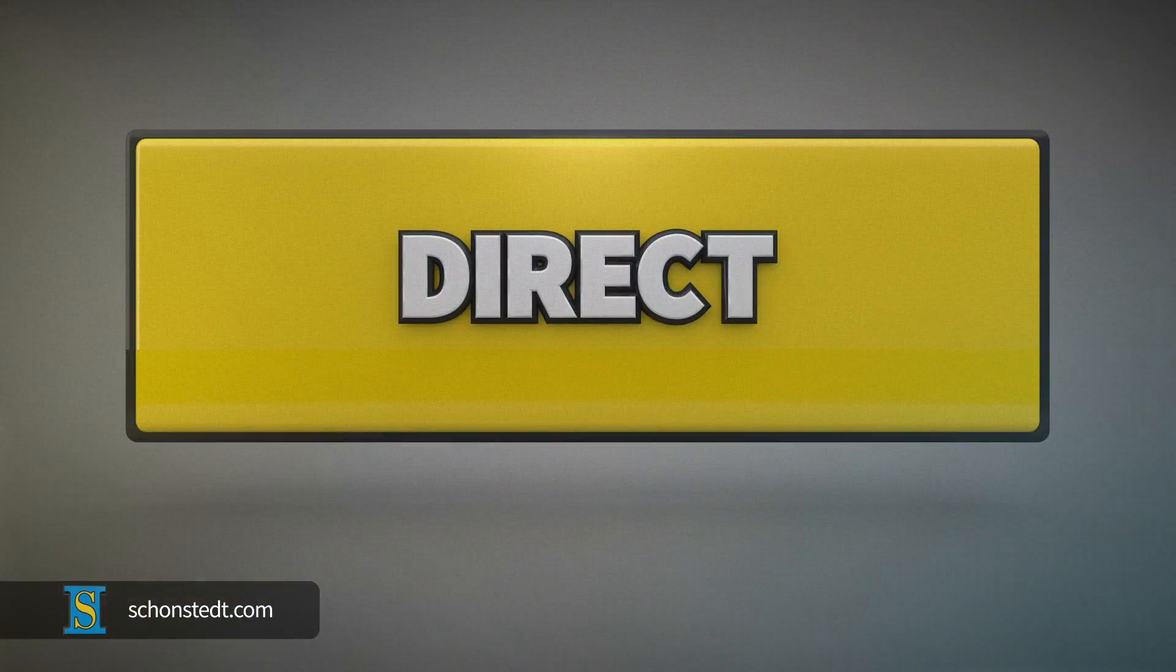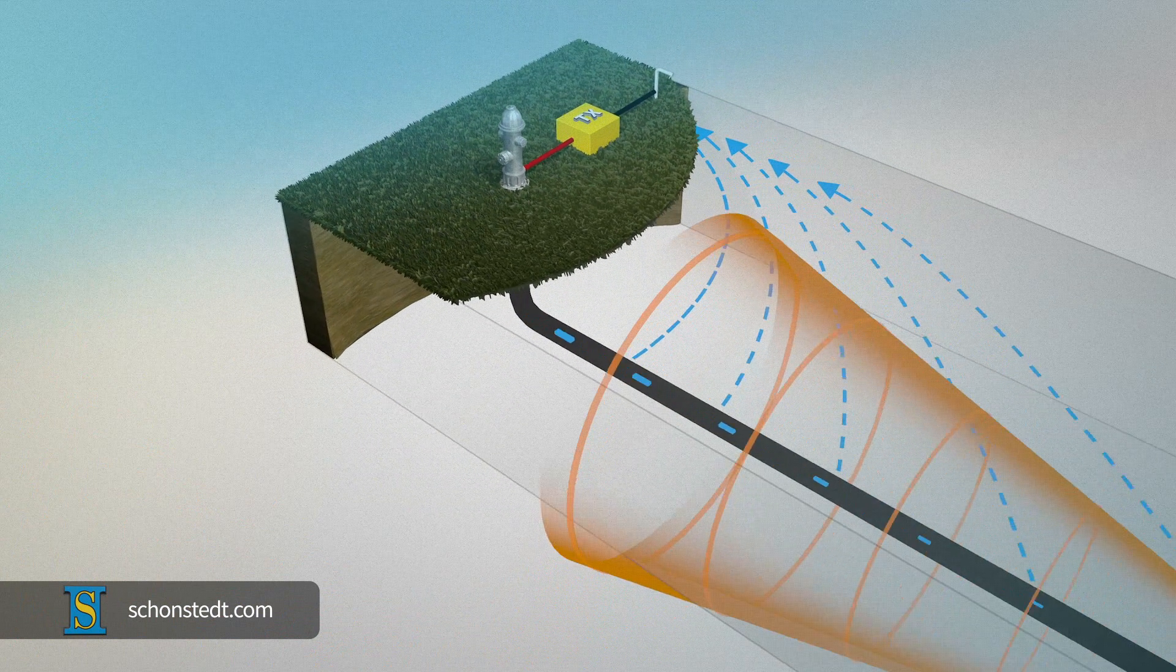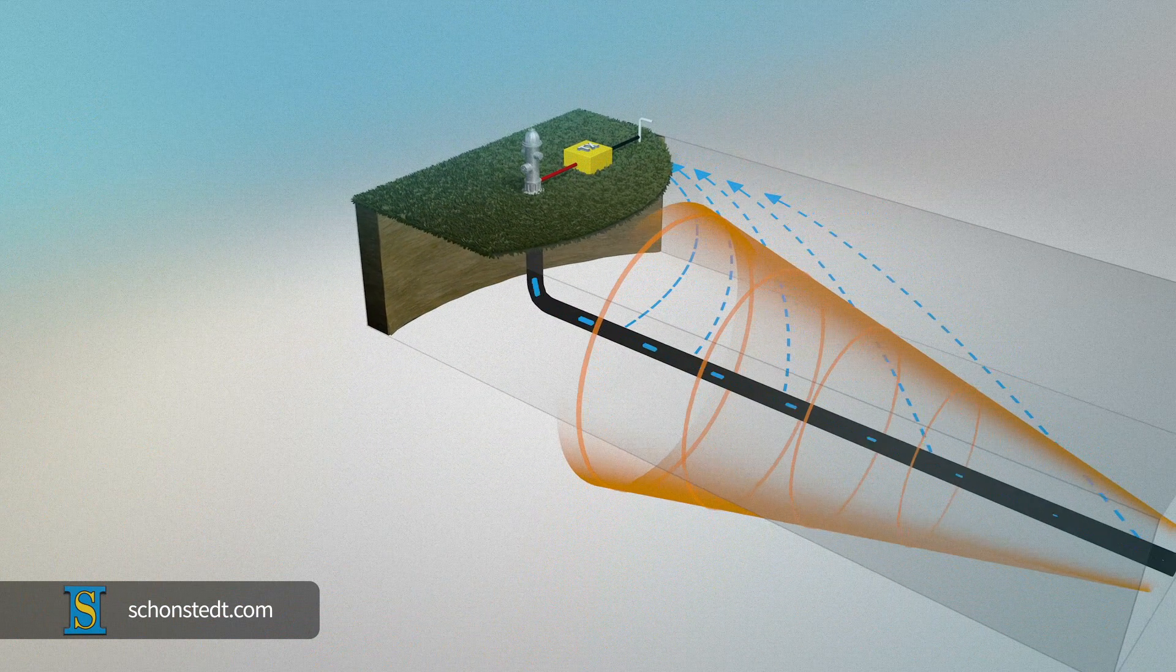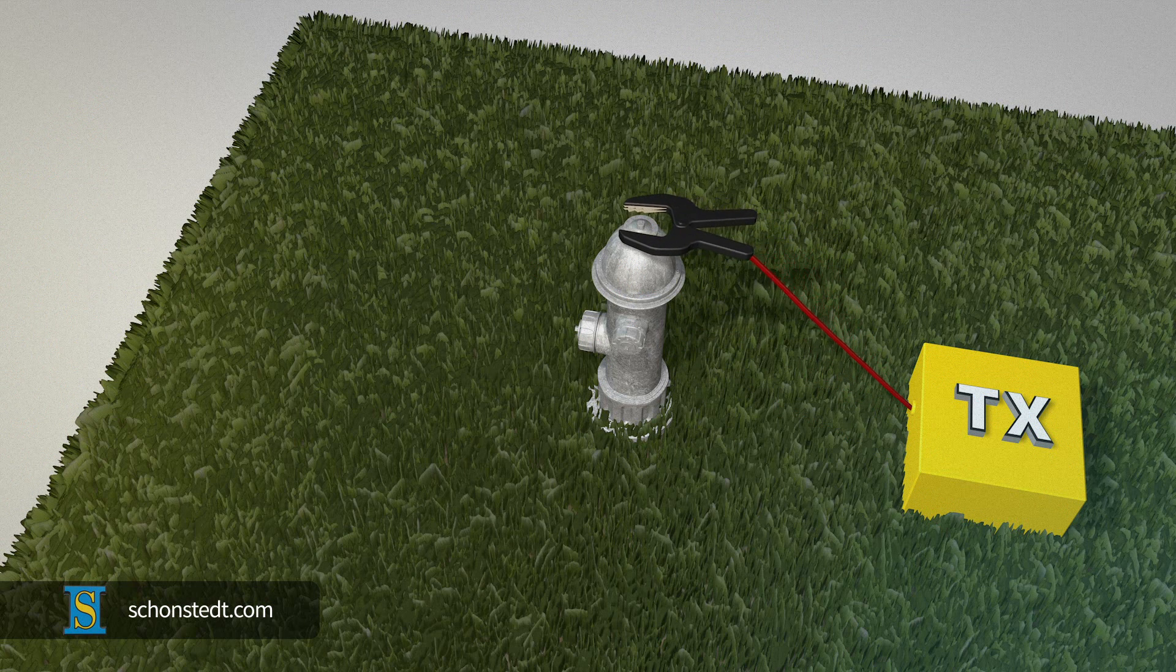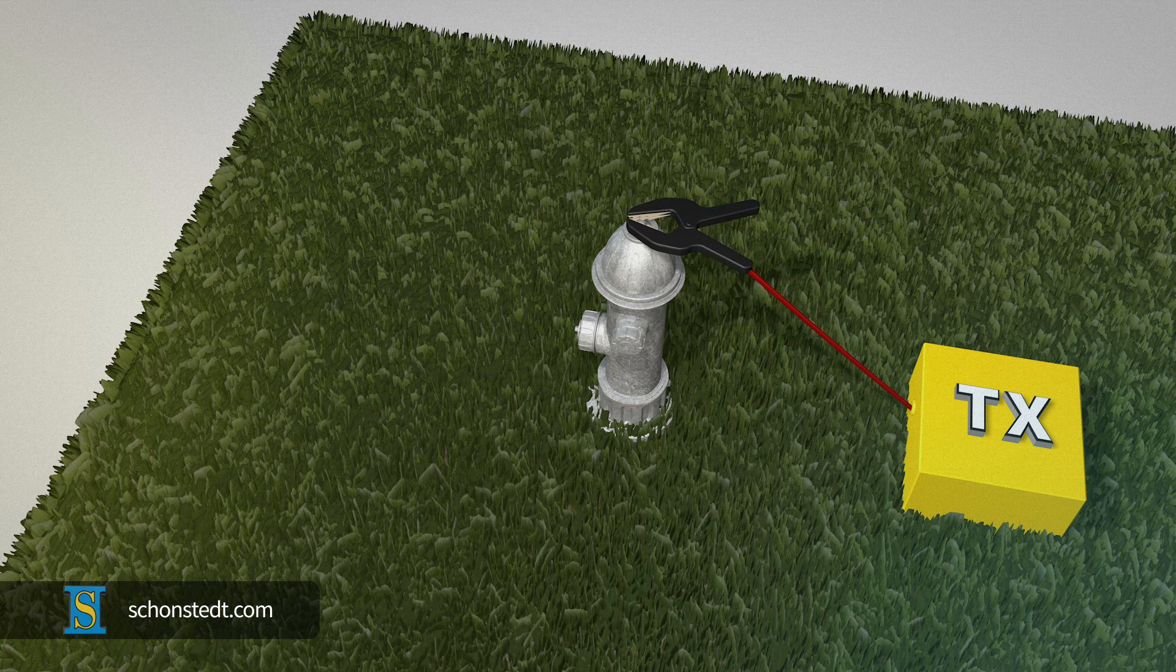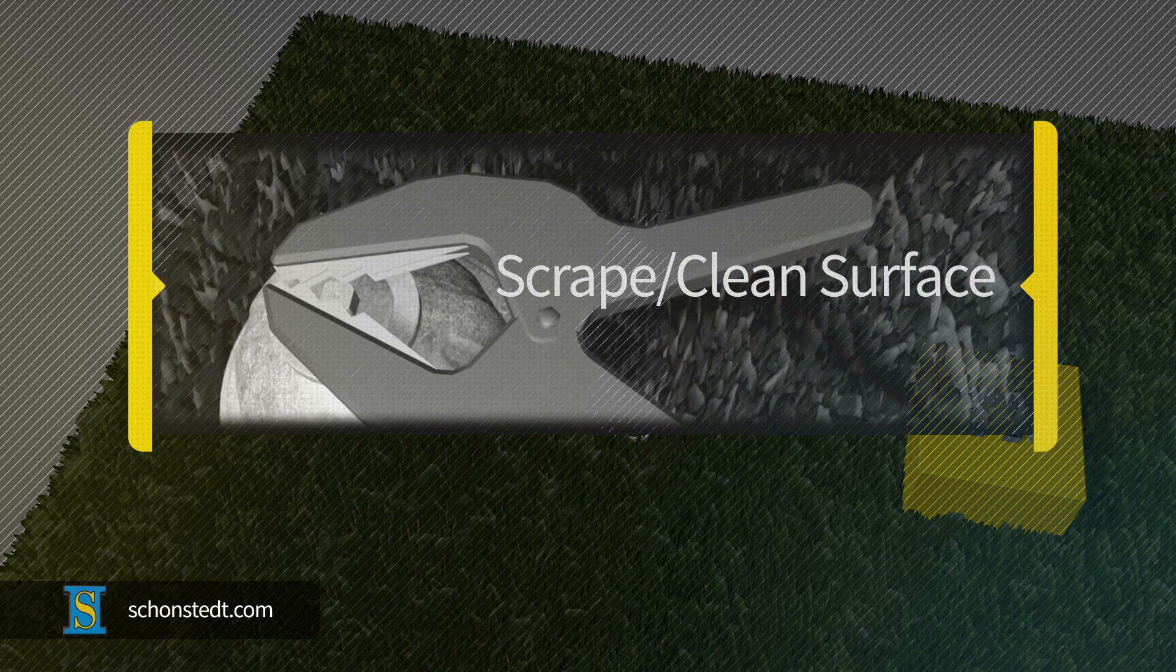With the direct method, you must make a direct connection to the pipe or cable being located. This concentrates the signal on the targeted line. First, take the clip attached to the red cable and apply it directly to the pipe or cable you're trying to locate. Make sure there is a good metal-to-metal contact. For best results, you may need to scrape or clean the surface at the point of contact.